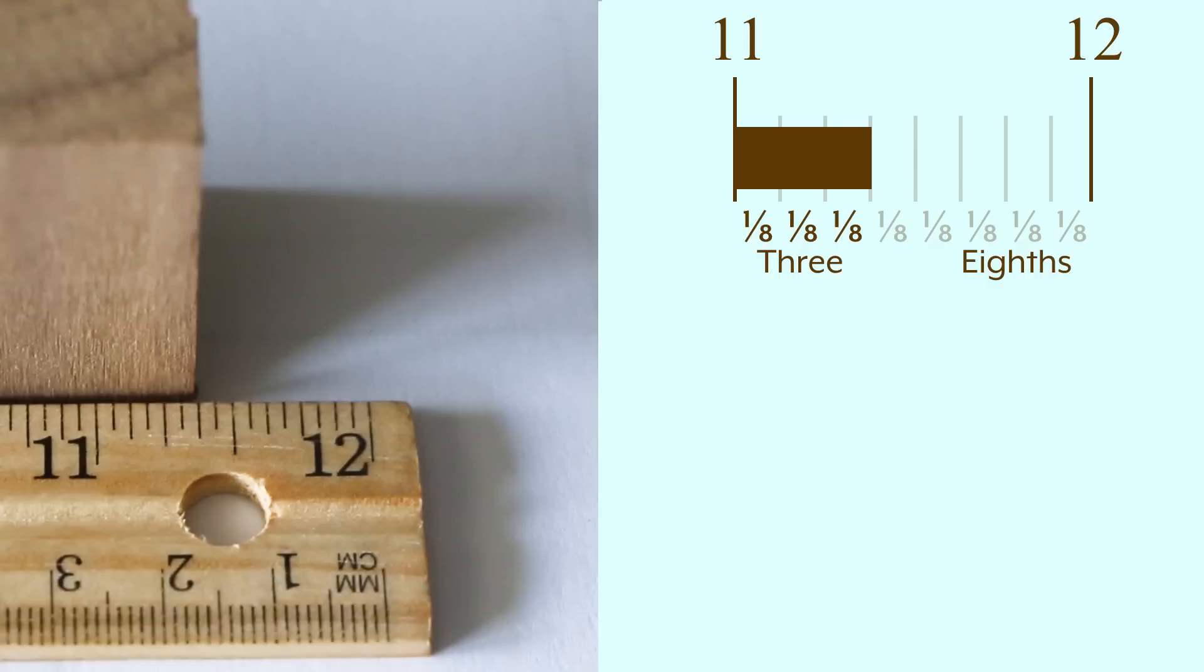We arrange them into fractions like so. The bottom tells us how big our slices are, which we will call our denominator. And the top tells us how many of those slices we're dealing with, which we will call our numerator.